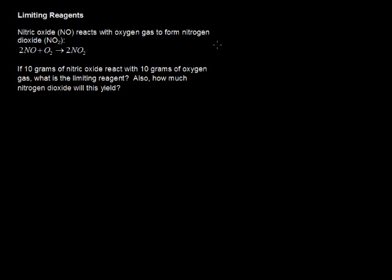In this video, I'll walk through an example of finding the limiting reagent in a chemical reaction. Nitric oxide, NO, reacts with oxygen gas to form nitrogen dioxide, NO2. 2NO plus O2 yields 2NO2. If 10 grams of nitric oxide reacts with 10 grams of oxygen gas, what is the limiting reagent? Also, how much nitrogen dioxide will this yield?